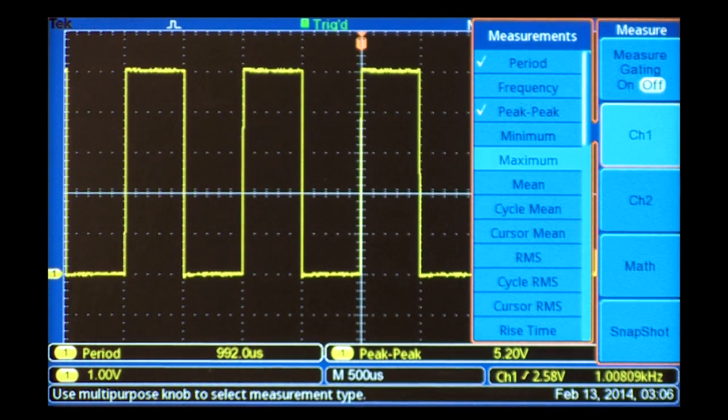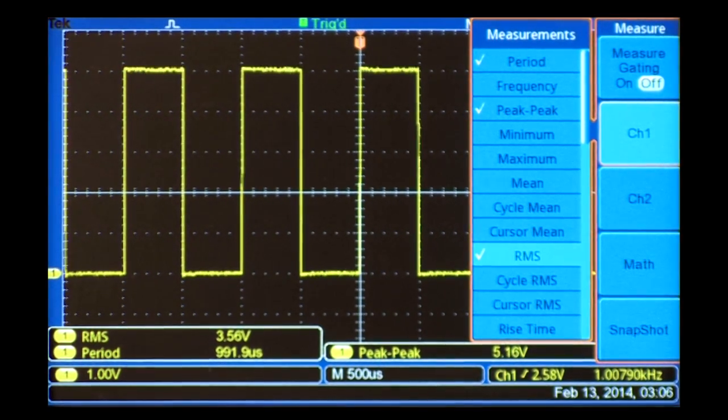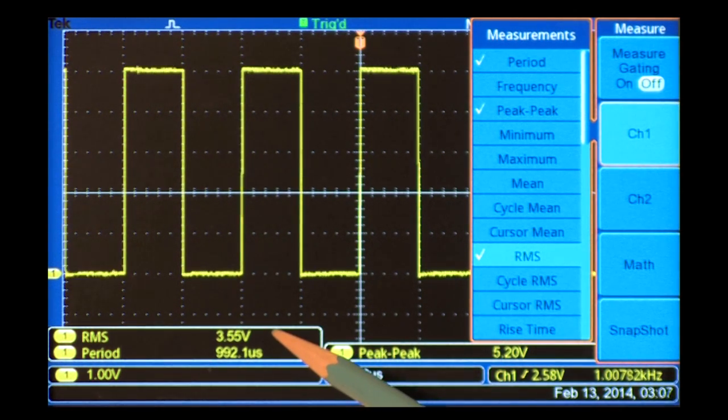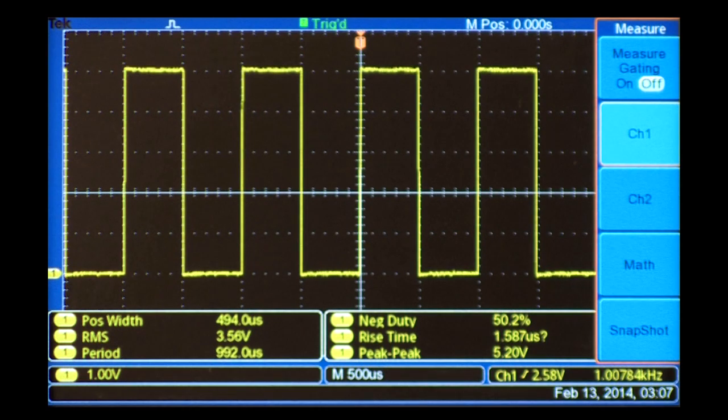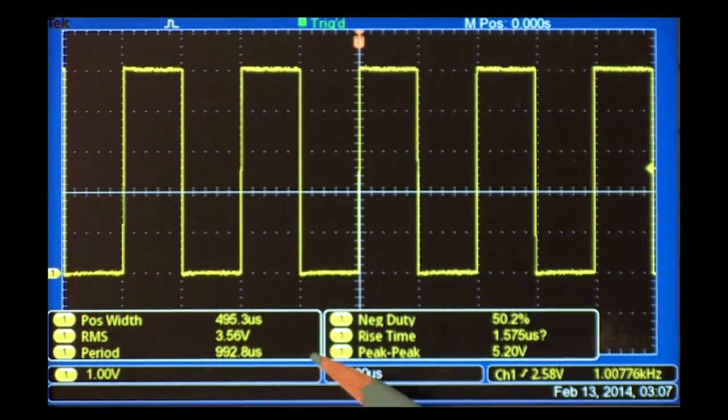Let's add root-mean square voltage. This measurement gives us the RMS voltage for the first cycle on the display. Let's add a few more. With the TBS-1000B oscilloscopes, we can view up to six different automatic measurements simultaneously.